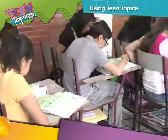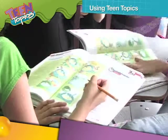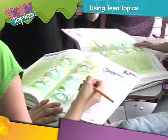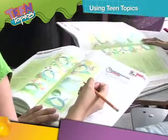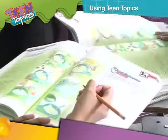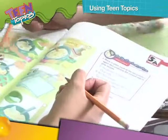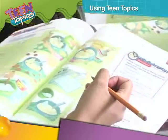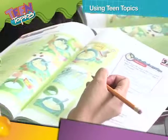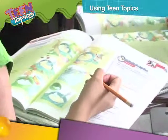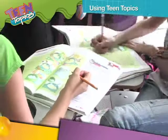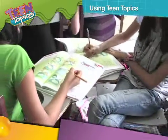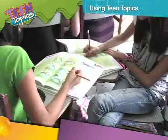In some lessons, you will find pair work activities that refer students to the pair work section at the back of the book. These are semi-controlled information gap activities that provide a situation in which students will use the language in context and in a meaningful, communicative way.